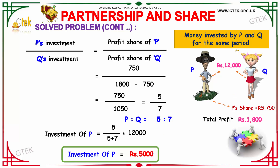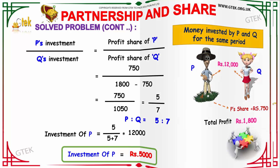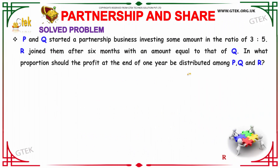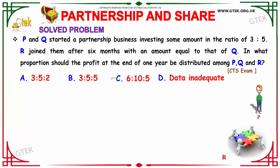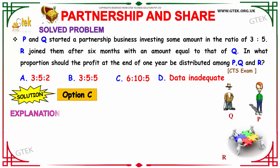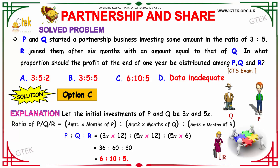Q's investment is Rs. 7,000. Now let's move on to the next problem. P and Q started a partnership business investing in the ratio of 3:5. R joined them after 6 months with an amount equal to that of Q. In what proportion should the profit at the end of one year be distributed among P, Q and R?